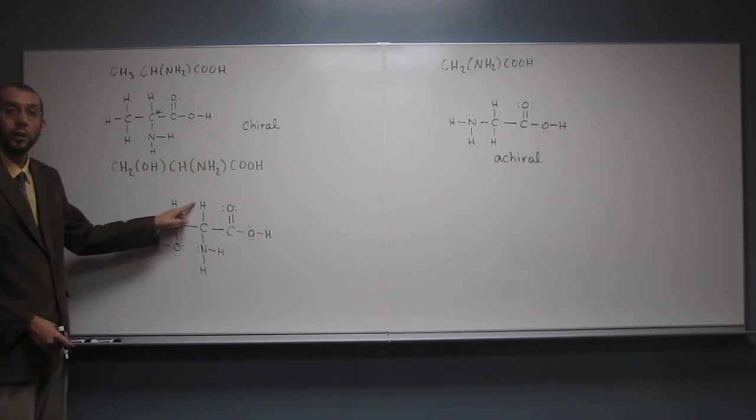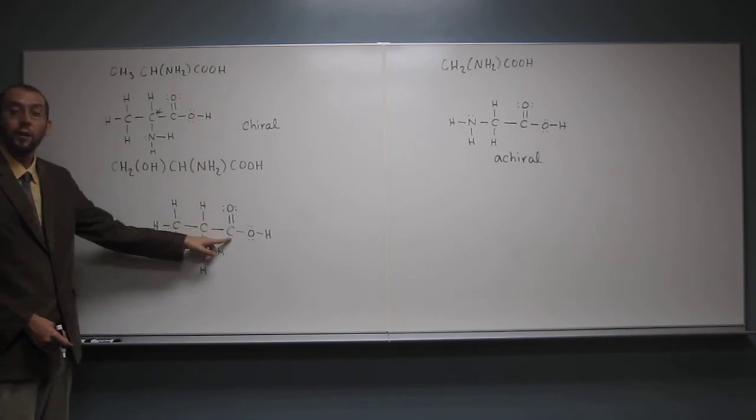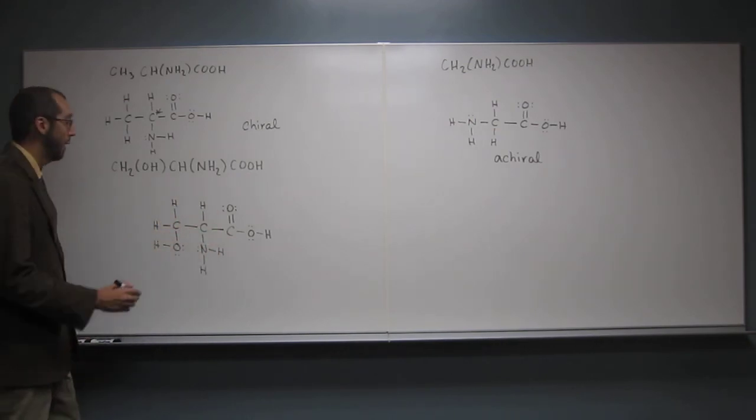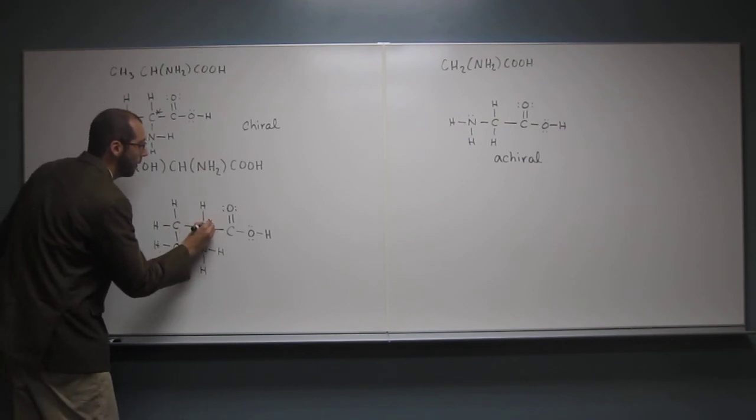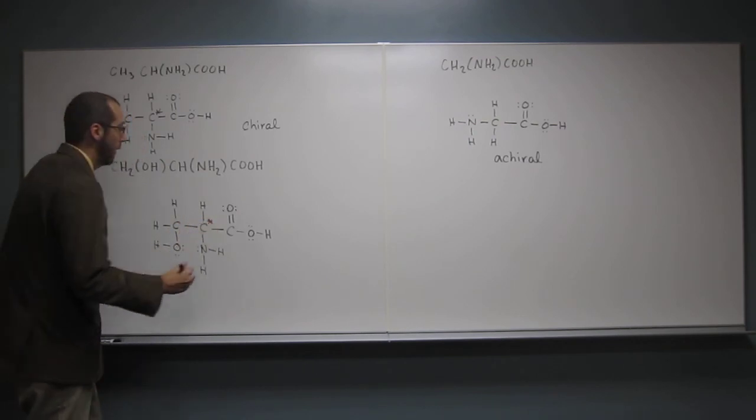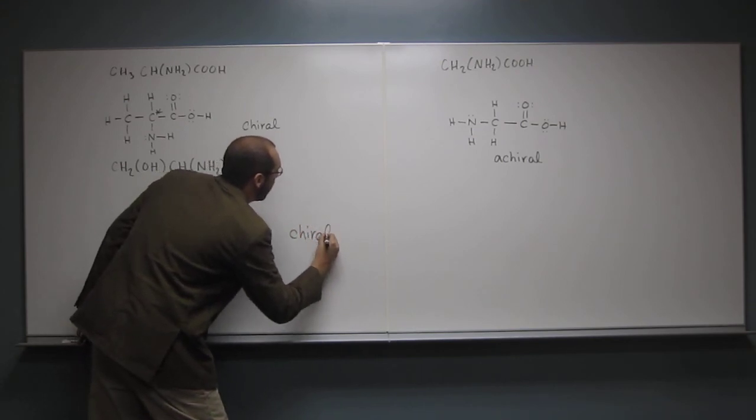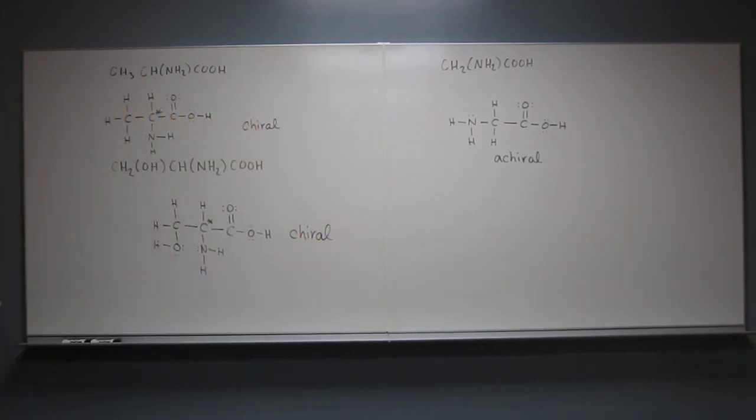So is this carbon bonded to four different groups? Yeah. Yeah. NH2 is different than H, clearly, which they're both different than COOH, and all three of those are different than CH2OH. Is that okay? Okay. So we would label that as a stereocenter there, and we would say this is chiral. Any questions on this one?